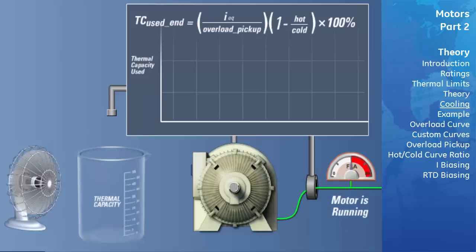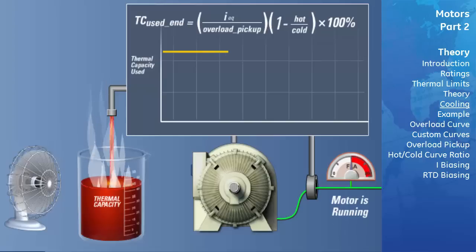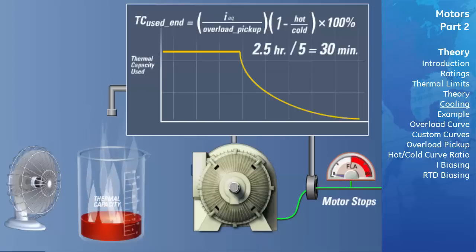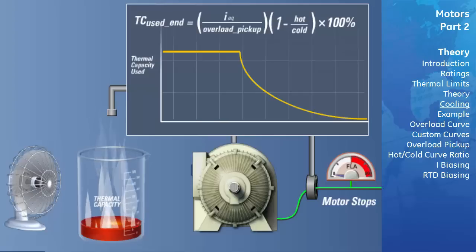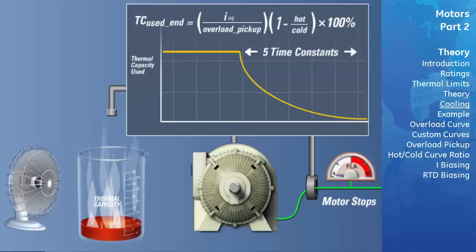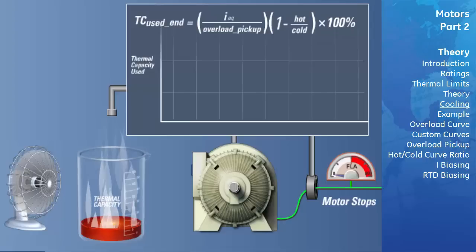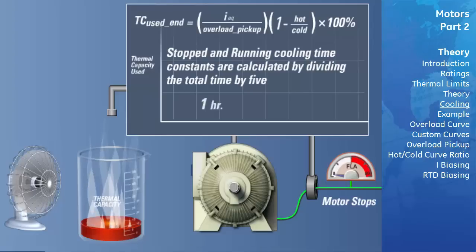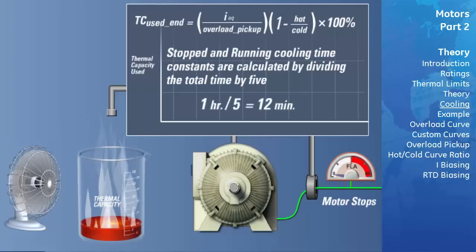For the GE Multilin 369 and 469 relays, the values of the running and stopped cooling times entered into these relays must be one-fifth of the actual stopped and running cool times. If the motor is stopped with a cooling time of 2.5 hours, the stopped cooling time constant entered into the relay would be one-fifth of 2.5 hours, or 30 minutes. The thermal capacity used will decay over five time constants, or 2.5 hours. For example, if the manufacturer states that the running cooling time is one hour, then 12 minutes would be entered into the relay as the running cooling time constant.